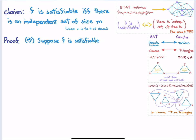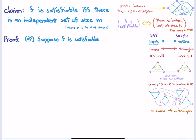The claim is: F is satisfiable if and only if there is an independent set of size M — corresponding to taking one vertex from every triangle. That's the best you can do, since you can only get one point from every triangle.